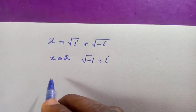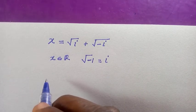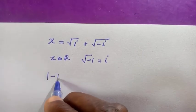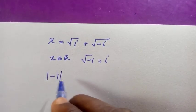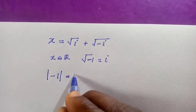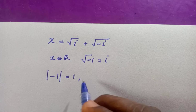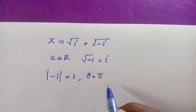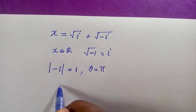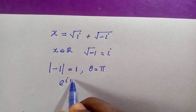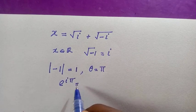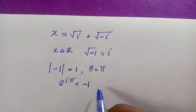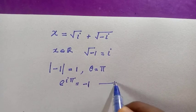I'm going to use two different methods. For the first one, let's write -1 in polar form. The absolute value of -1 is 1, and the value of theta here is π radians. So from the polar exponential form of this complex number, we have e^(iπ) = -1.